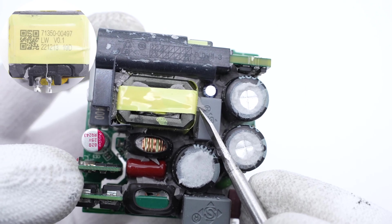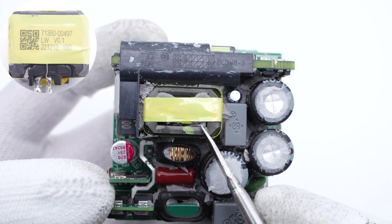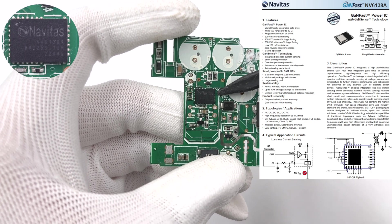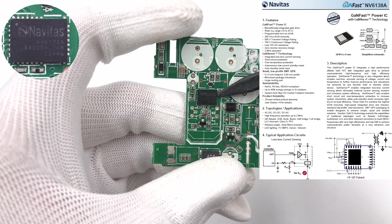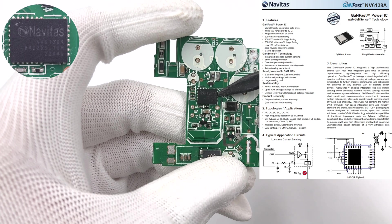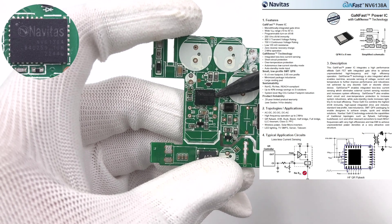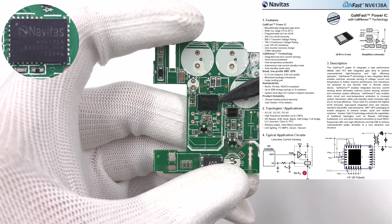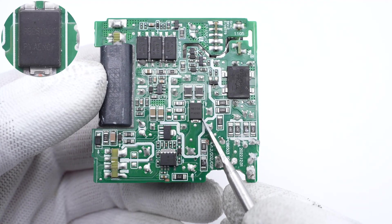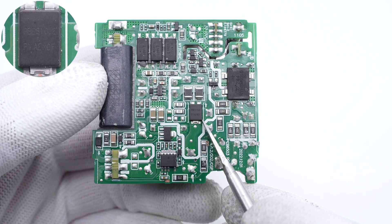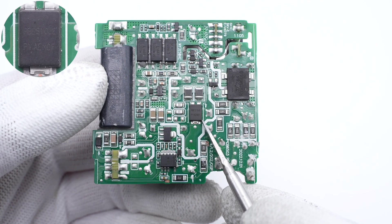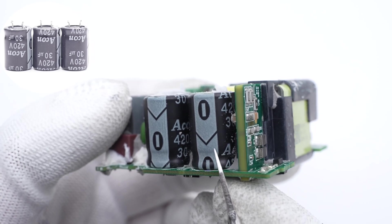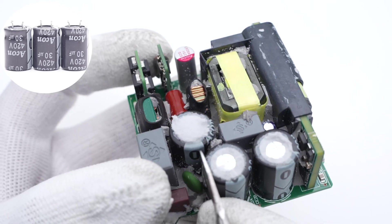This is the PFC boost inductor, wrapped with tape for insulation. The Navitas GaN IC for PFC circuit is under the PFC boost inductor and adopts QFN 6x8 package. It integrates driver and high-precision lossless current sampling circuit, 120mΩ 700V. The Pingwei PFC rectifier is actually an ultra-fast recovery diode, 10A 600V. Those three electrolytic capacitors are from AIKON and connected in parallel, 420V 30μF.